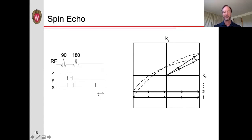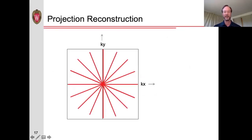Now let's look at some other ways we might sample k-space. One would be projection reconstruction — instead of acquiring different phase encoding steps, we rotate the direction of the gradients and acquire different spokes of radial projections. We can then do either a radon transform or re-grid the data in order to create our actual image.